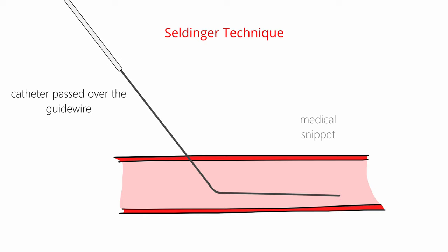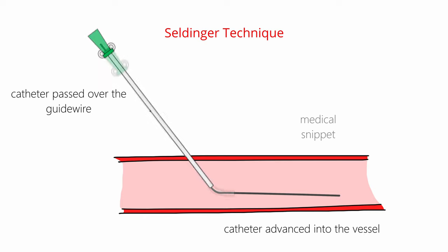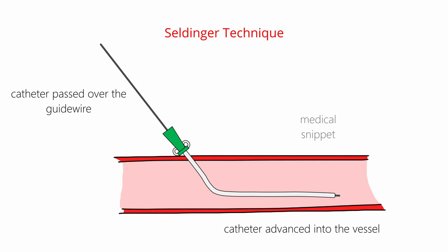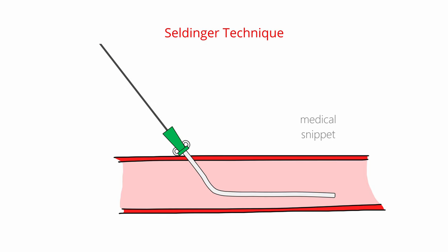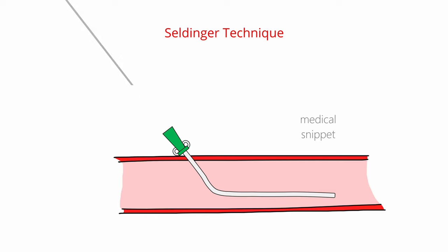Then the catheter is passed over the guide wire and advanced into the vessel. Once the catheter is in position, the guide wire is removed. Thus, a catheter sheath has been safely placed into the vessel. This is called the Seldinger technique.